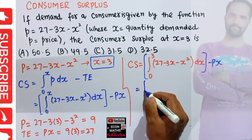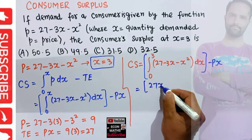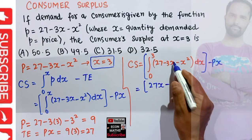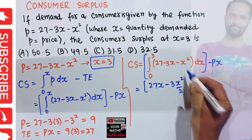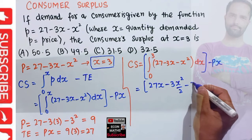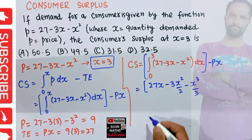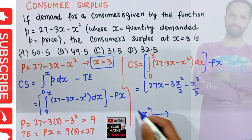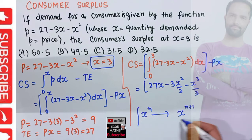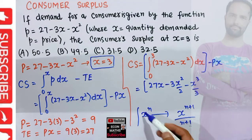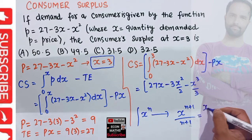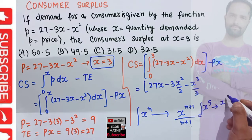The integral of 27 is 27X. The integral of 3X gives 3 times X squared over 2. The integral of X squared is X cubed over 3. By the power rule of integration, the integral of X to the power n is X to the power n plus 1 divided by n plus 1 — we add 1 to the exponent and divide by the resulting exponent.